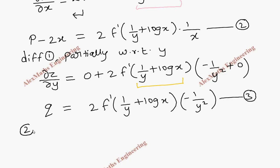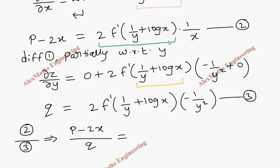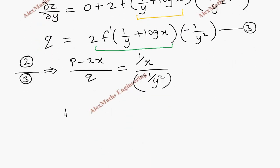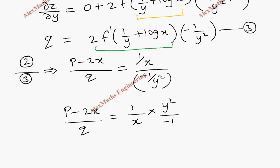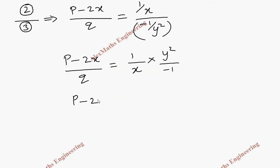Now we divide the second expression by the third expression. The f dash terms cancel, leaving only the remaining terms: 1/x divided by minus 1/y squared. Since it is a fraction, we take the reciprocal and multiply, so p minus 2x by q equals 1/x into y squared over minus 1, giving p minus 2x by q equals minus y squared by x.